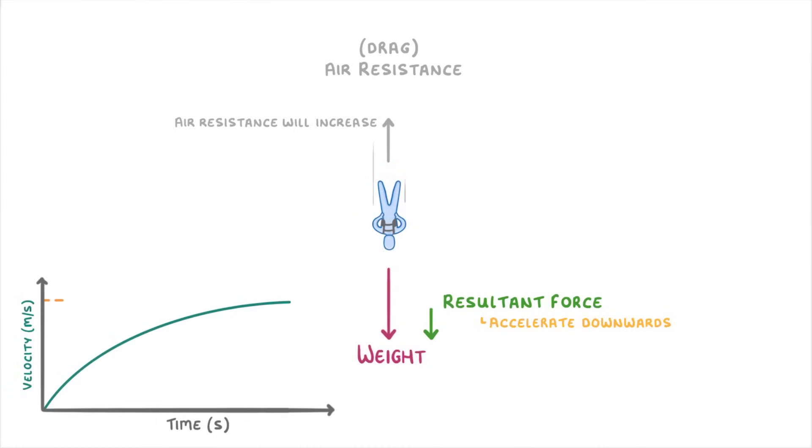At some point though, the velocity will get so high, and there'll be so many collisions between the particles and the person, that the air resistance will increase to the same size as the weight. This means that the two opposing forces, so the weight and the air resistance, will now balance each other out. Which means that there'll be zero resultant force, and so the person will stop accelerating.